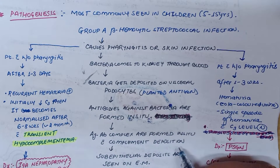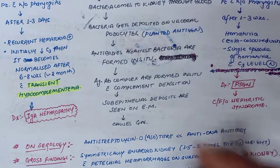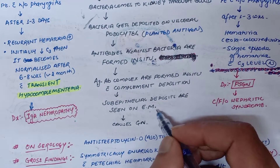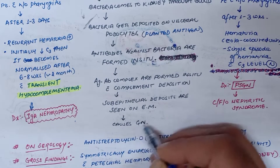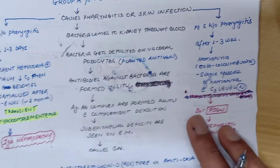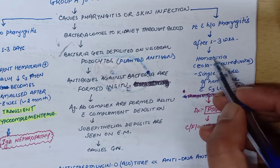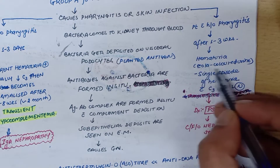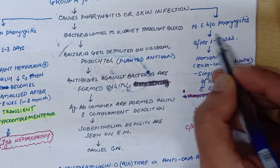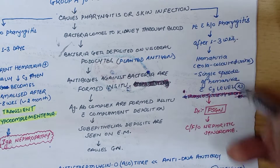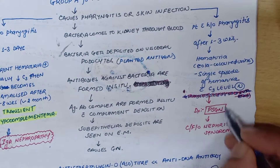With complement deposition, this will result in sub-epithelial deposits seen on electron microscope, and will result in glomerulonephritis. Remember, if a patient has hematuria or cola-colored urine after one to three weeks of pharyngitis, then we can suspect it to be PSGN.